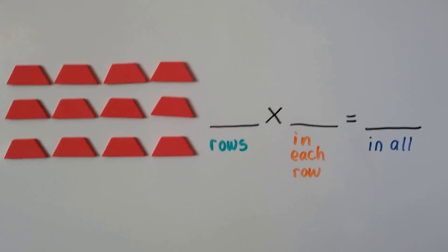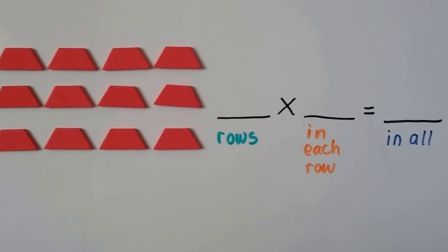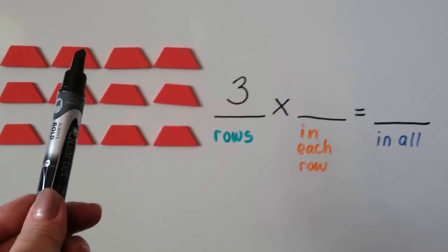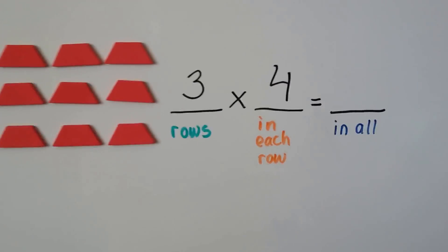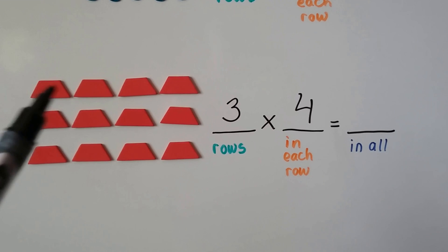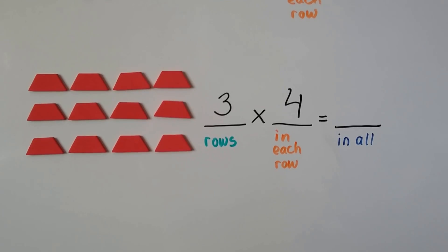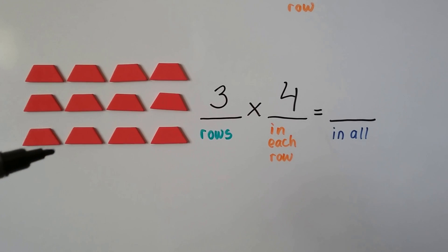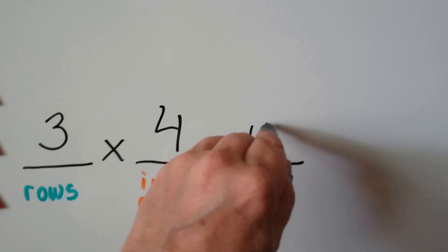How about here? How many rows are there? 1 row, 2 rows, 3 rows. And how many are in each row? 1, 2, 3, 4. Remember, in order for it to be a multiplication fact with an array, every row has to have the same amount of objects in it. How many do we have in all? 4, 5, 6, 7, 8, 9, 10, 11, 12 — so 3 times 4 equals 12 in all.